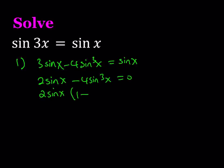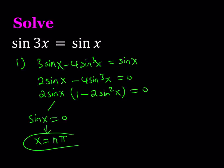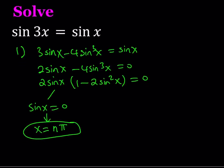From here I get 1 minus 2 sine squared x equals 0. By setting each factor equal to 0, from here I get sine x equals 0, which obviously has solutions where x is equal to n pi. So if x is a multiple of pi, then sine x is going to be 0.